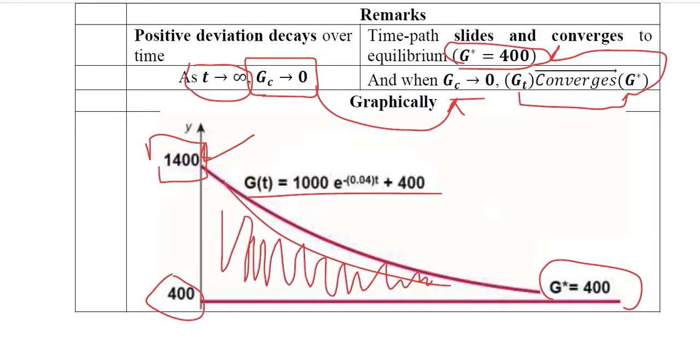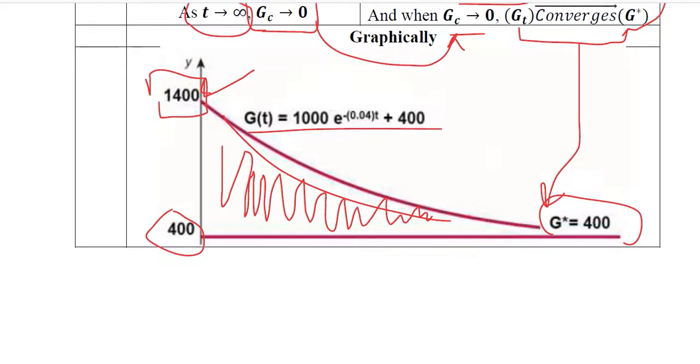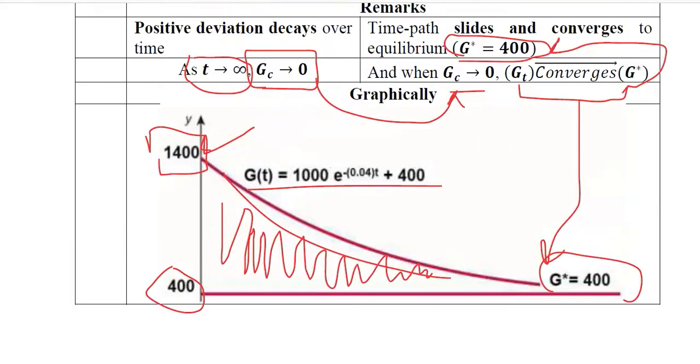So it is getting close to equilibrium which is represented with this. This is how we can easily understand how the convergence can take place in this situation where we are trying to observe the dynamics of the gold mine. Thank you.